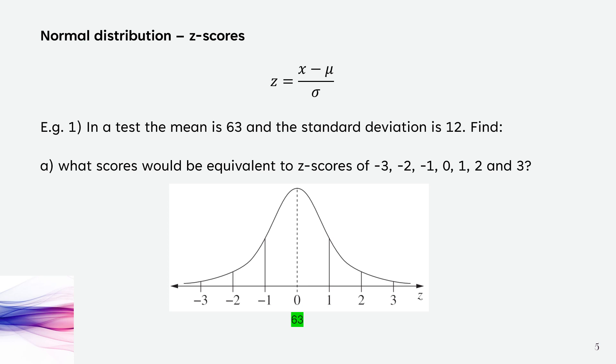For the minus 3 to 3, we'll use this graph from the reference sheet. The mean is the centre, so the mean is z-score of 0. The standard deviation is 12. We've got no standard deviation at the mean because the mean is the middle for a bell curve, for a normal distribution.